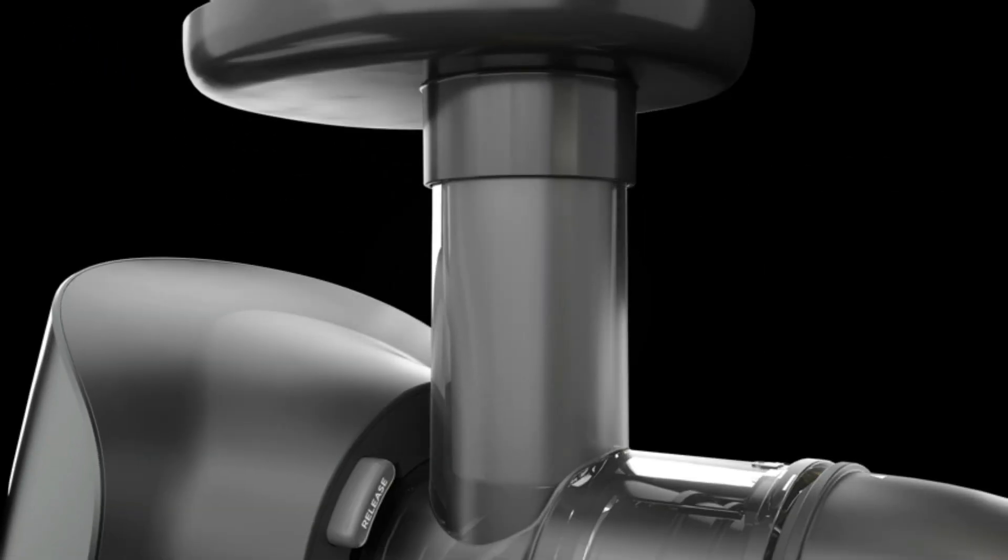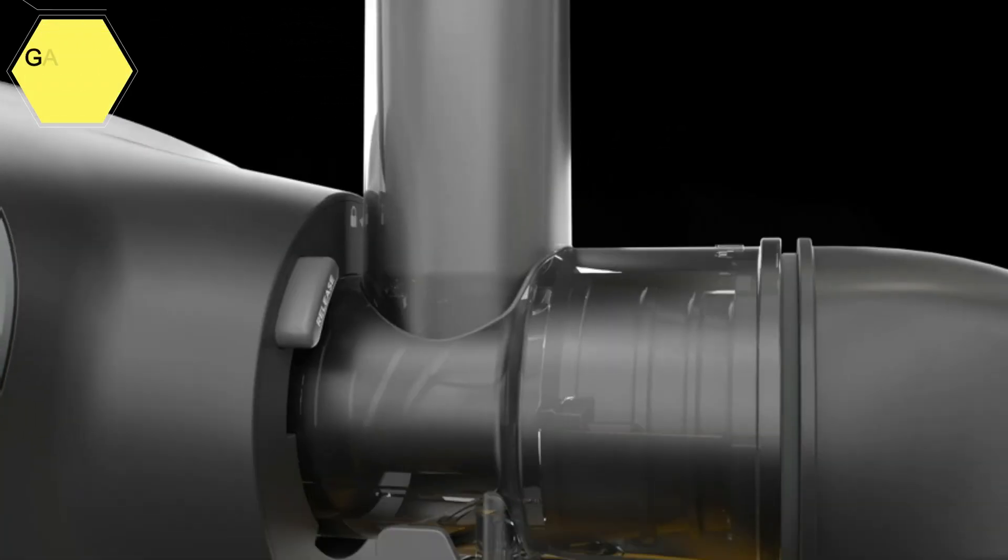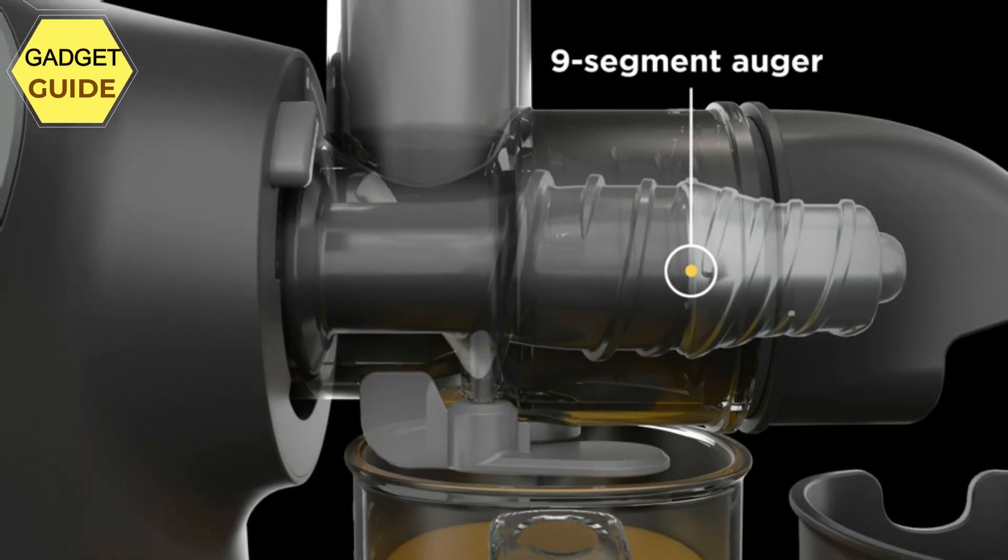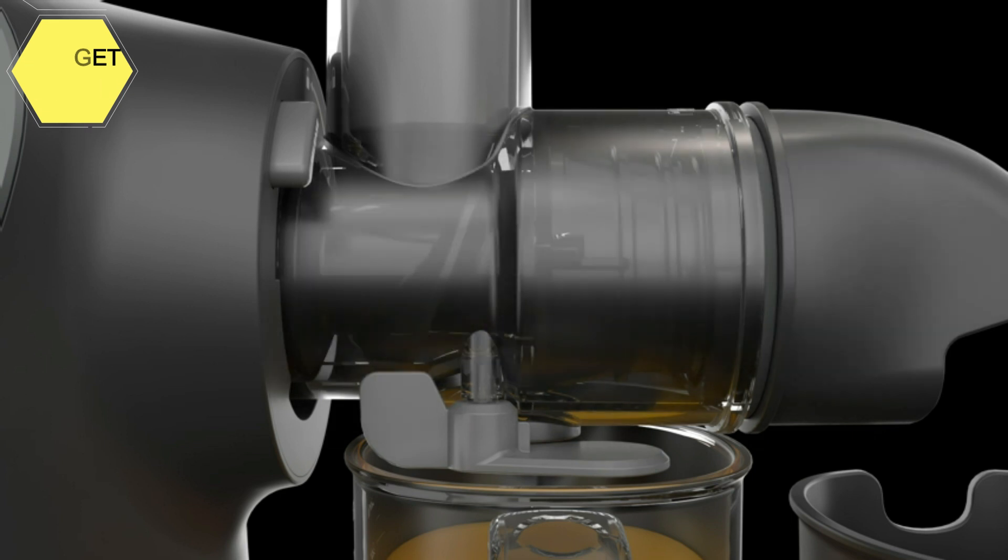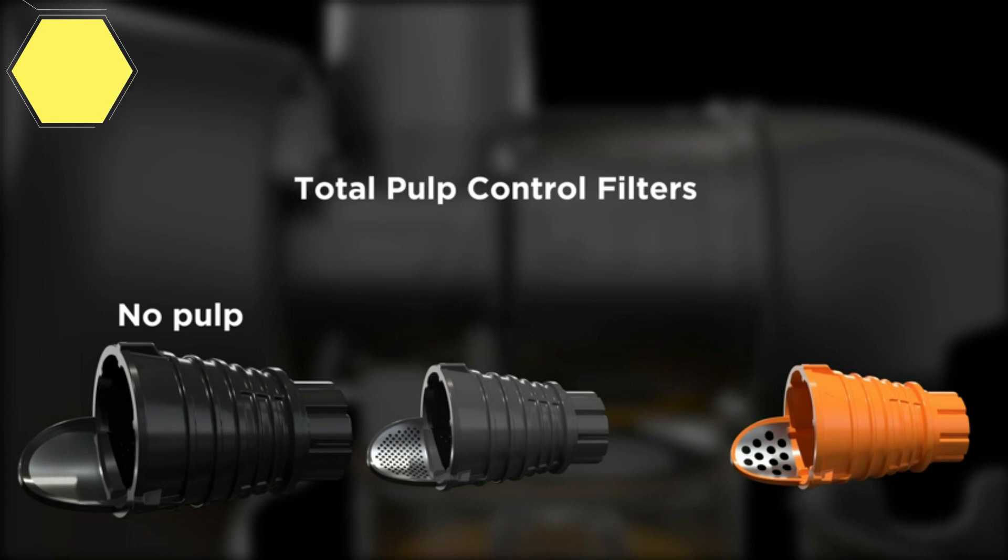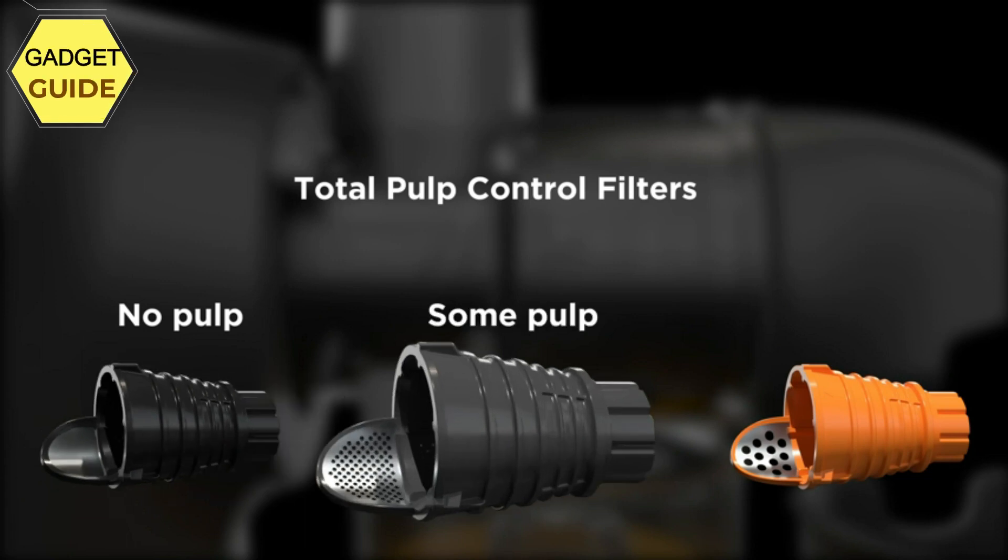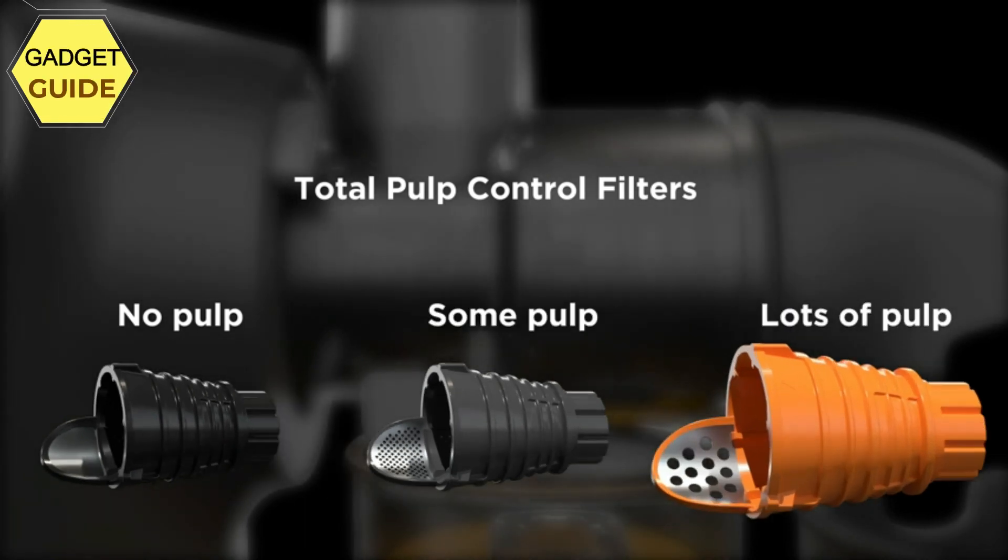Total pulp control allows for customized juice with three interchangeable pulp filters: no pulp, some pulp, and lots of pulp. With all parts that touch juice dishwasher safe, the Ninja Cold Press Juicer Pro is easier to clean than leading centrifugal juicers.